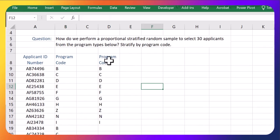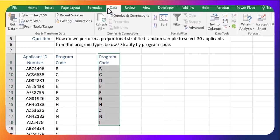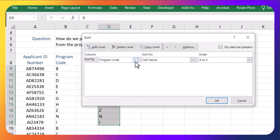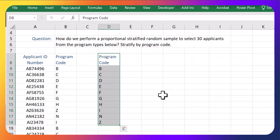If we would like to make them a little bit nicer to look at, let's go back to Data and Sort. And let's sort by program code A to Z. And now they're in alphabetical order as well.